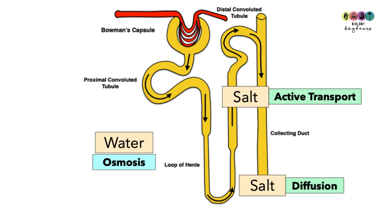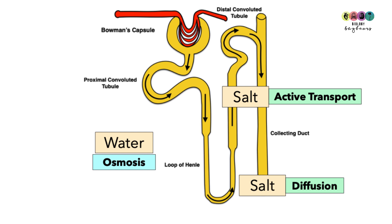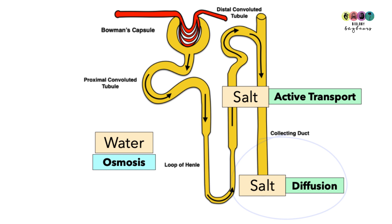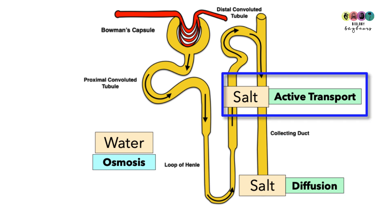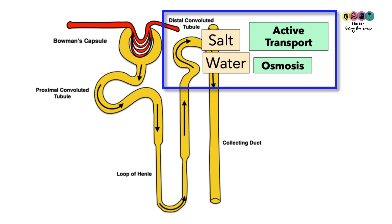As you go down the descending limb of the loop of Henle, water is reabsorbed by osmosis. At the bottom of the ascending limb, salts are reabsorbed by diffusion, and at the upper portion of the ascending limb, salt is reabsorbed by active transport. At the distal convoluted tubule, more water is reabsorbed by osmosis and more salt by active transport.